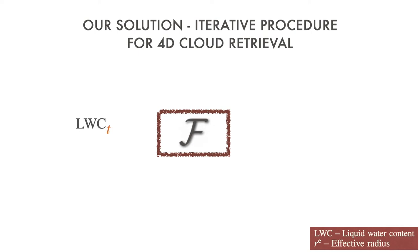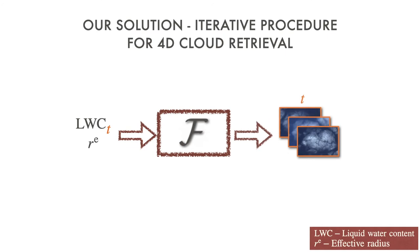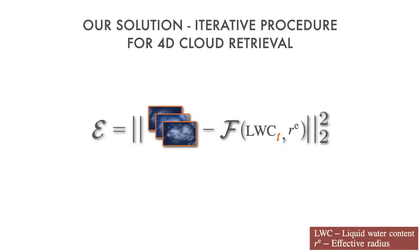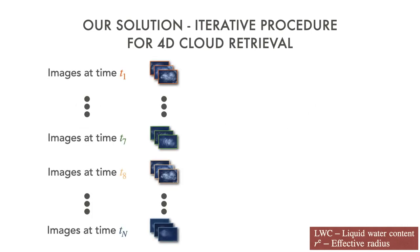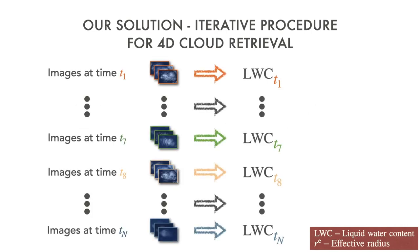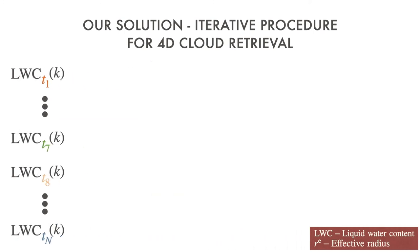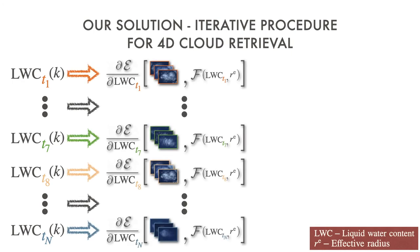We use an iterative process based on a forward radiative transfer model. Given the liquid water content at time t and the droplet's effective radius, a forward model yields a set of corresponding multi-view images. Comparing the generated model images to ground truth image data yields a data fitting cost and its gradient. Consider cloud images taken at n time steps; an iterative process recovers the cloud content at these instances. We calculate the cost gradient separately per time instance.